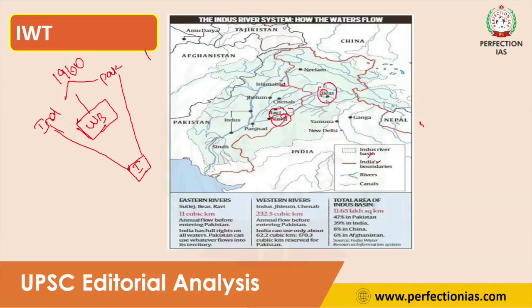According to this treaty, three of the eastern rivers — Sutlej, Beas, and Ravi — belong to India and India can utilize the water of these three rivers without any restriction. The three west-flowing rivers — Indus, Jhelum, and Chenab — belong to Pakistan, and Pakistan can utilize the water of these rivers fully.